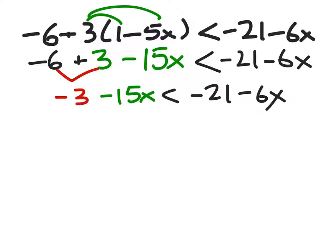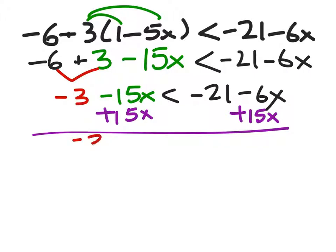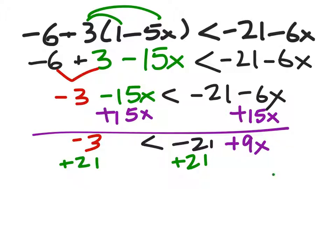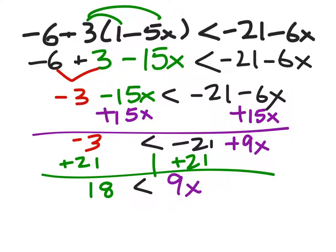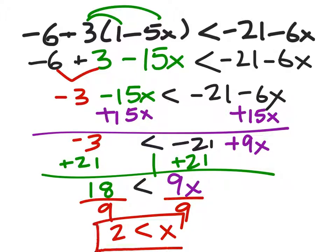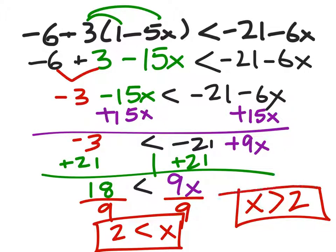I'll put x's on the right side, so I add 15x to both sides. That gives negative 3 less than negative 21 plus 9x. Adding 21 to both sides gives 18 less than 9x. Dividing both sides by 9 — a positive, so no flip — gives 2 less than x, or equivalently x is greater than 2.